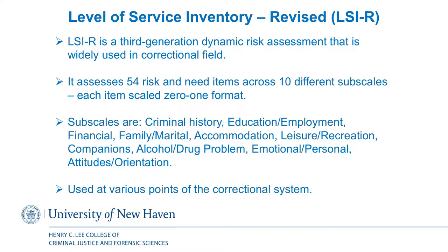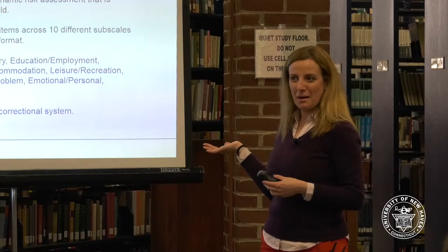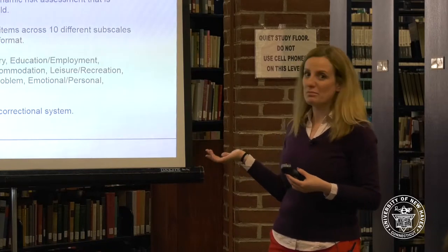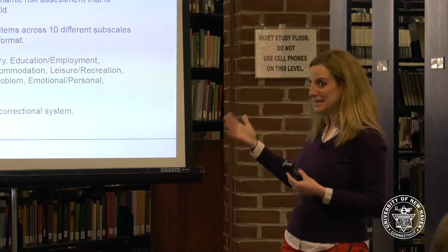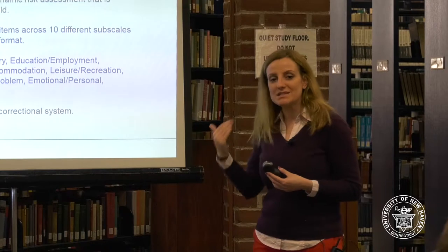There are about 54 items in this tool — 54 questions that you ask — and there are 10 different subscales. They look at things like criminal history: does this person have a prior record? Employment and education — a lot of offenders tend to quit school around 10th grade, which is when you're allowed to drop out, showing a history of non-conformist behavior. It also looks at employment history; a lot of offenders are not able to stay employed for a whole year. Then financial problems, and family and marital situation.